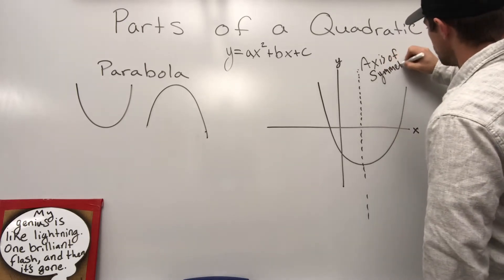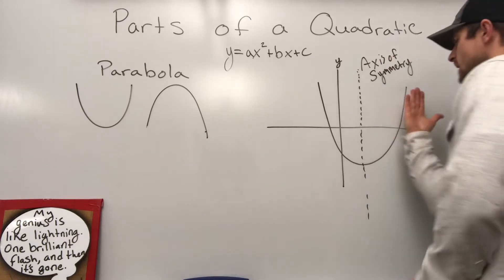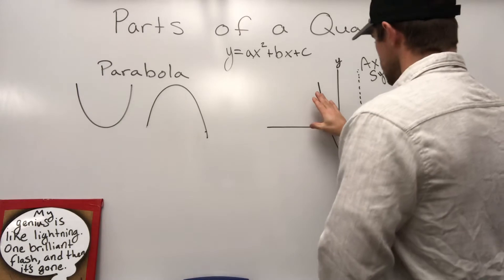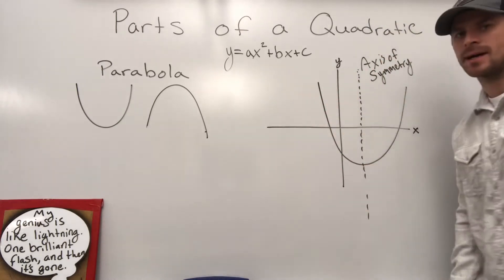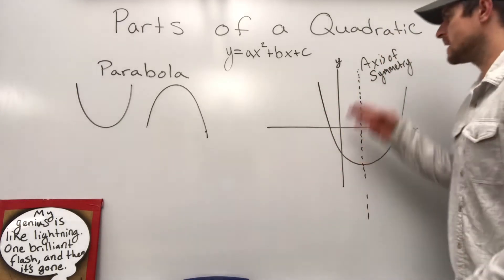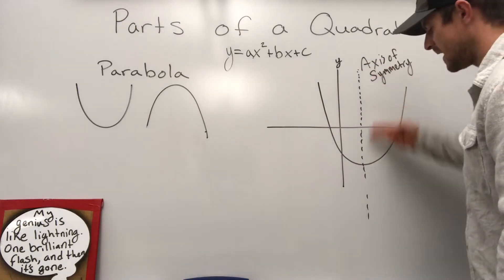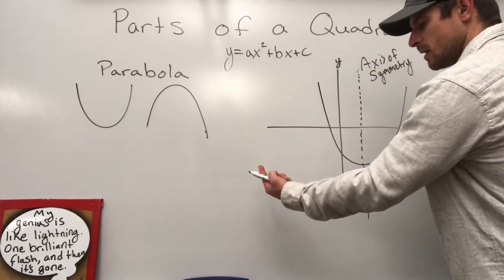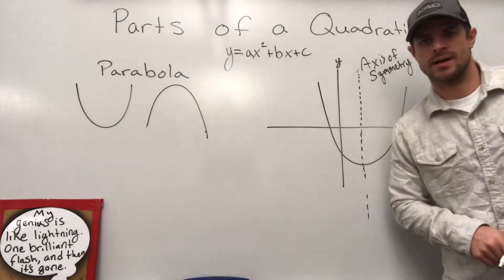And the reason we call it that is quite simple. If I were to take the right side of this and fold it over to the left side, this would fold perfectly right on top. It's a matching side. So the axis of symmetry basically just divides the two sides of the parabola symmetrically.